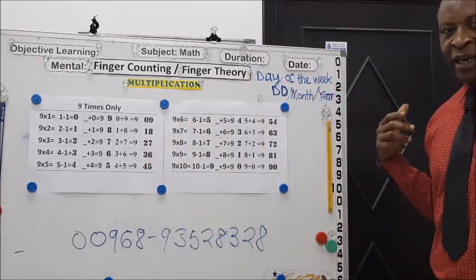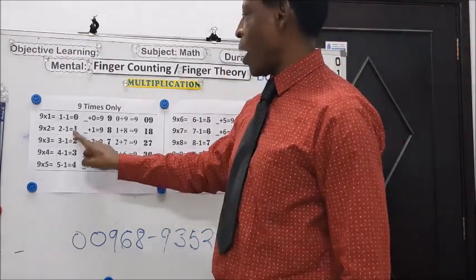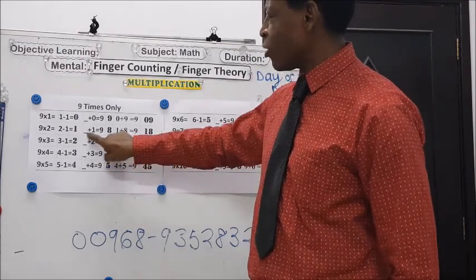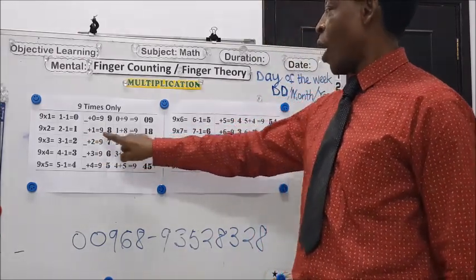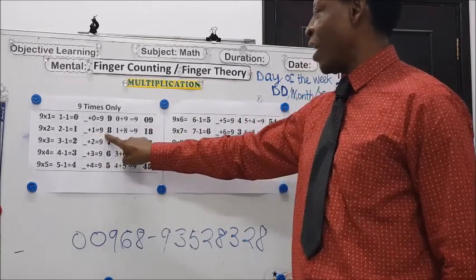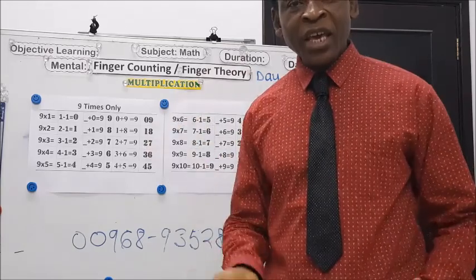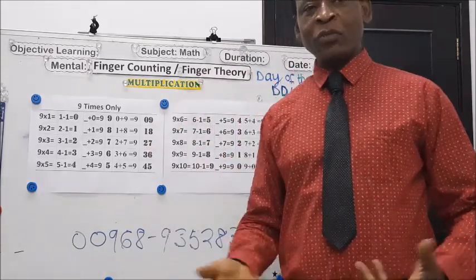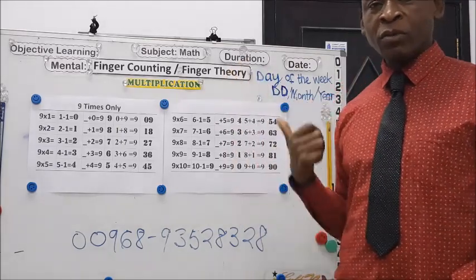Back, that is 2 minus 1 is 1. So you write your 1 down. What number should I add to 1 and I'll get 9? That is 8. So I'll write my 1 and then write the 8: 18. So let's see 3 times 9, what will it be? 3 times 9, subtract 1 from the 3.